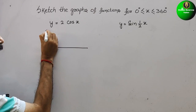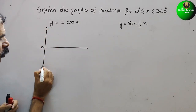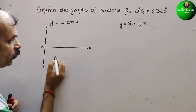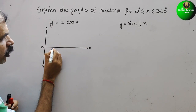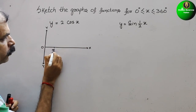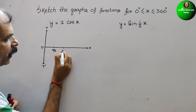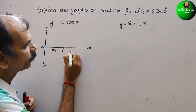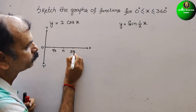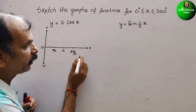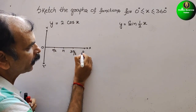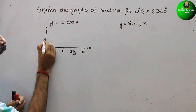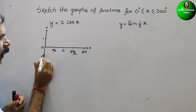So on the y-axis, this is your y-dash and this is your x. On the x-axis, first is pi by 2, that is 90 degrees; second is pi, that is 180 degrees; next is 3 pi by 2, that is 270 degrees; and next is 2 pi, that is 360 degrees. On the y-axis, you have to mark 1 and minus 1.